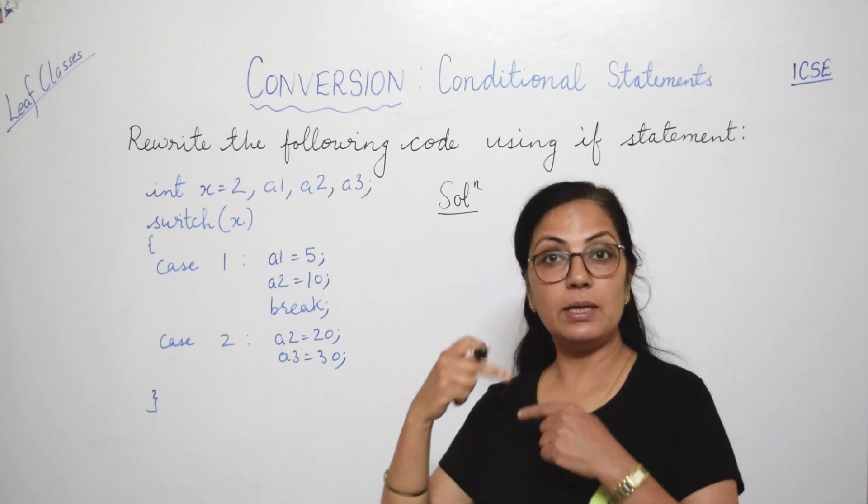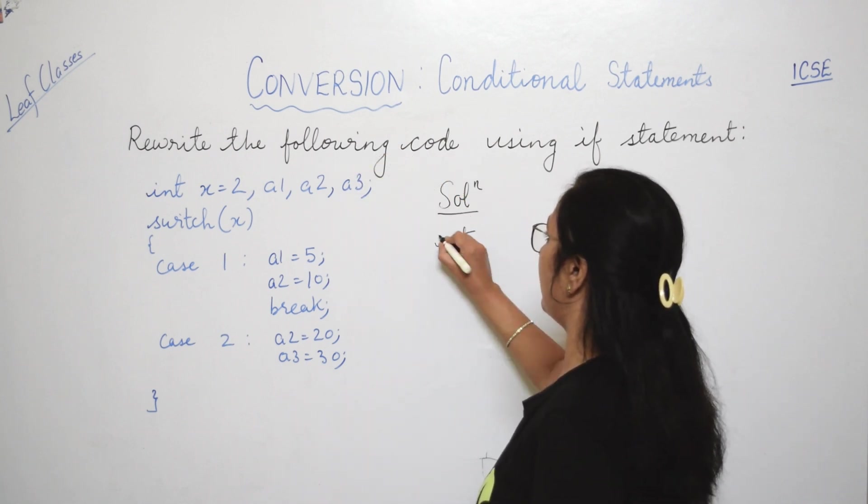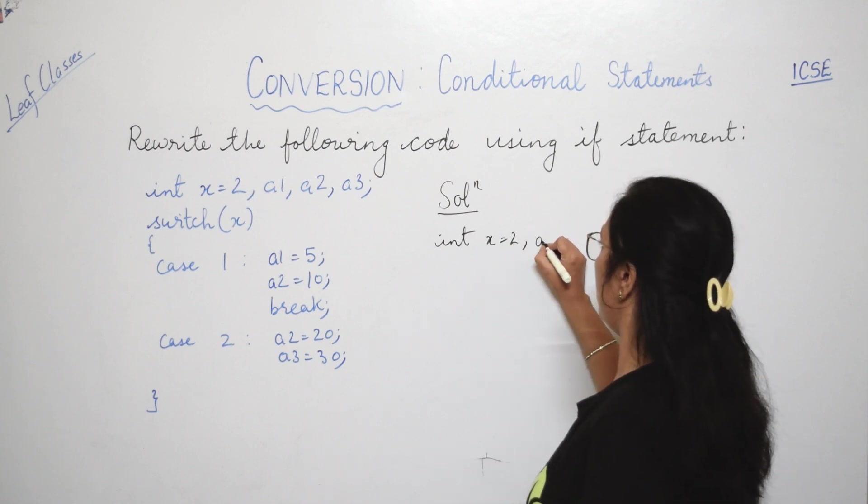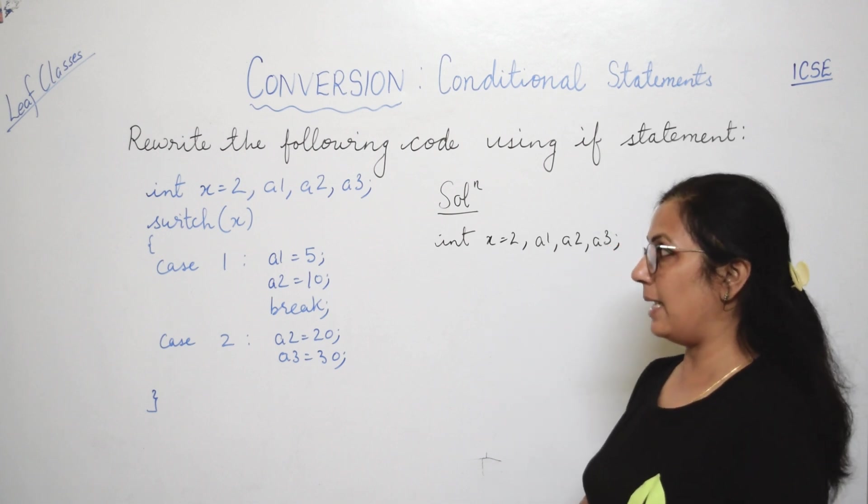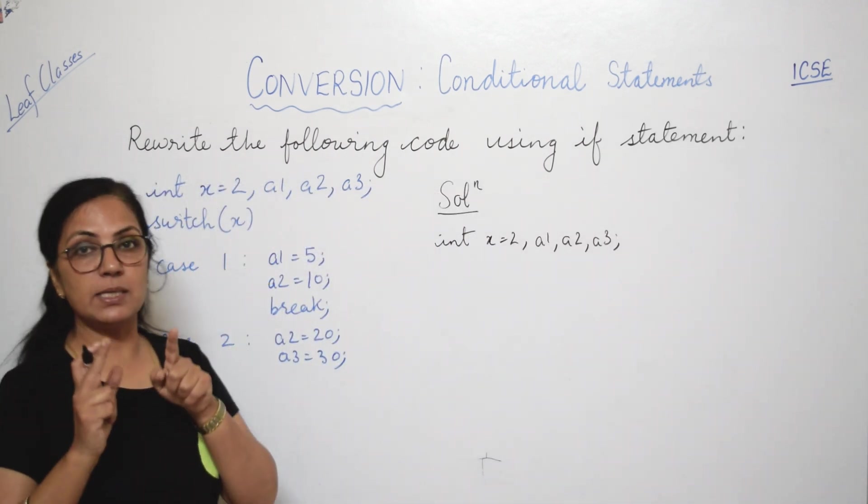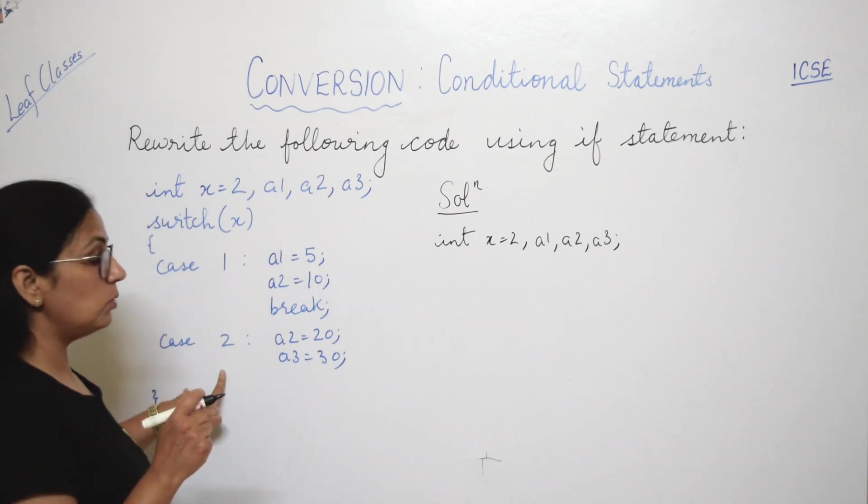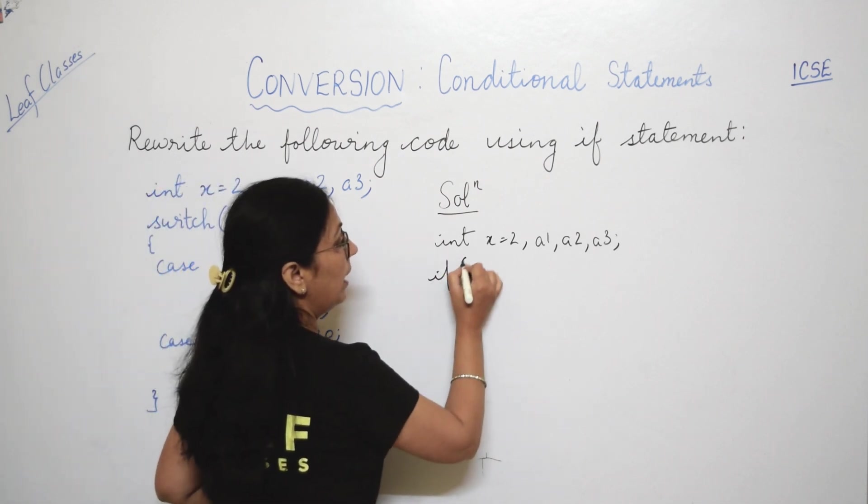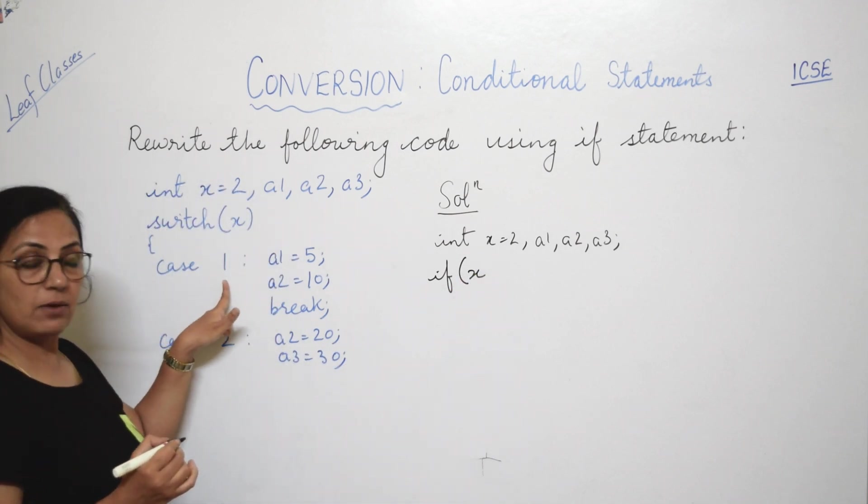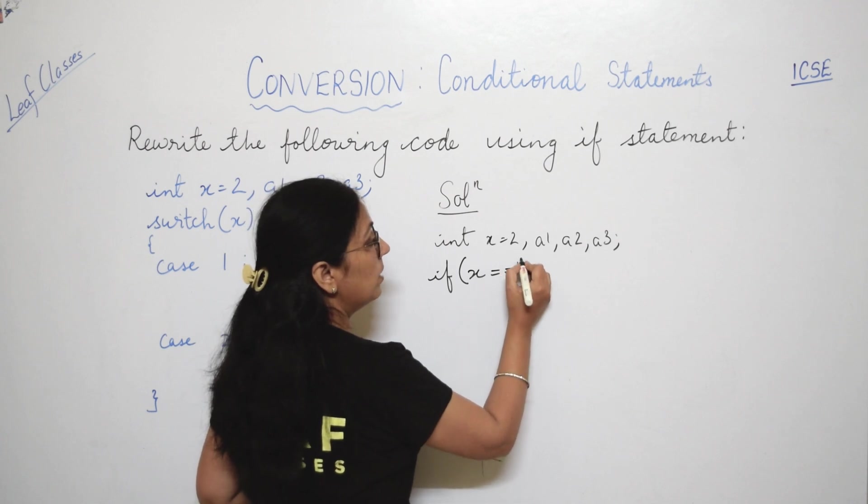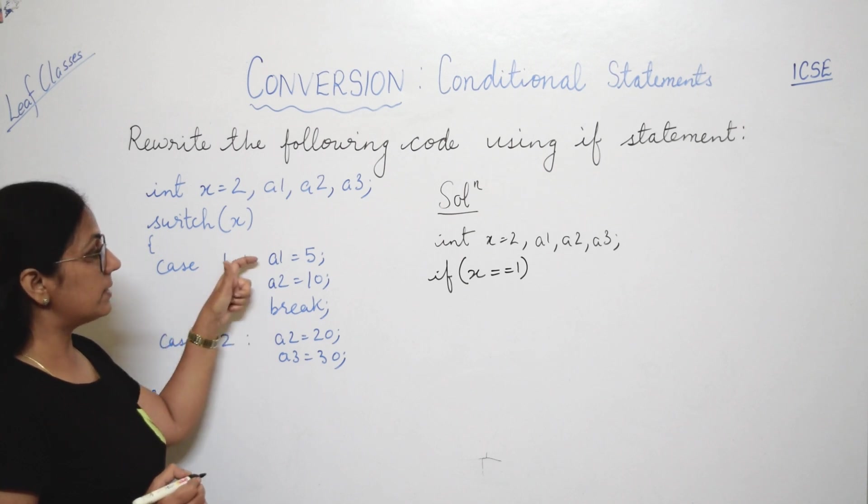Now the solution for this. Here you have to convert this into if. So the first line you will not leave that. You have to rewrite this entire statement, right? So first line you will write like this only: int x equals to 2, a1, a2, and a3. These three you will declare. Now after this, switch x. Here x is the control variable. That means with condition we have to use this x. x ki value 1 hogi toh kya? x ki value 2 hogi toh kya karna hai? So here if x, jo control variable hai, that you will write here. Aur jo case ki value hai, first case ki value you will write here. If x is equals to 1, toh humko kya karna hai?